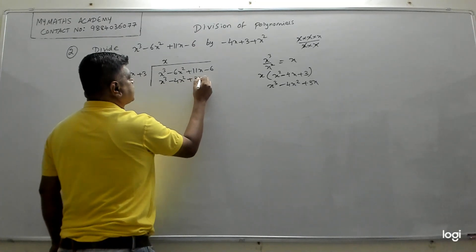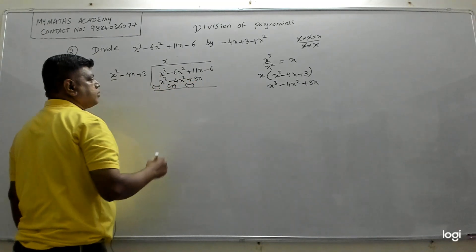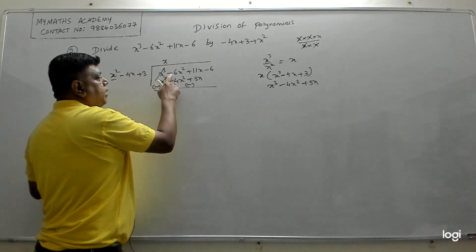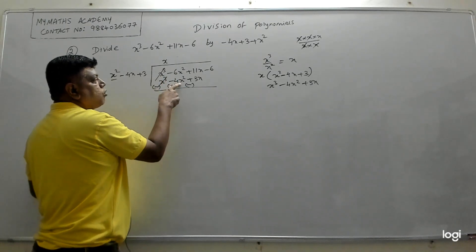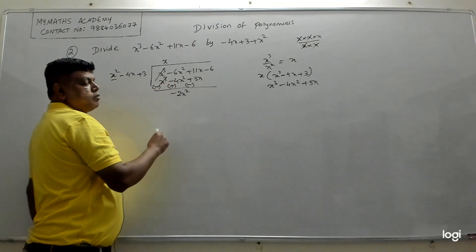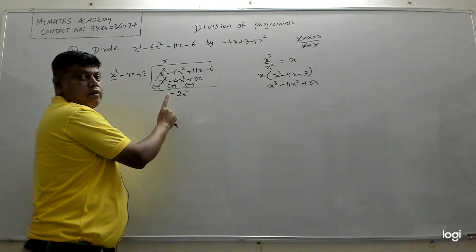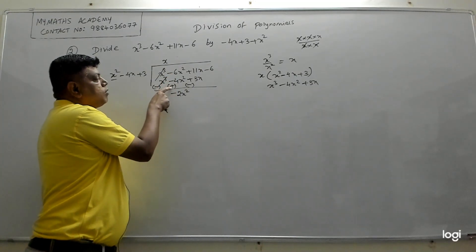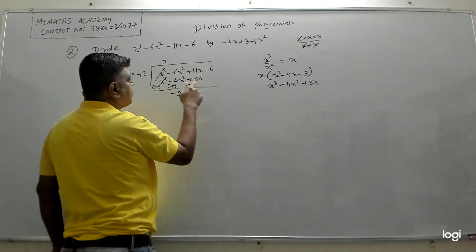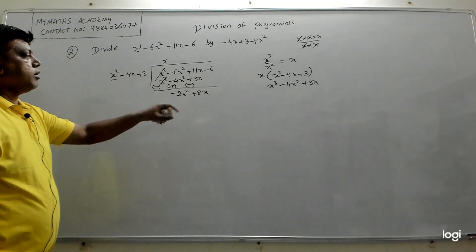Substitute x³ − 4x² + 3x here and subtract — change the signs. x³ − x³ cancels. Then −6x² + 4x² = −2x². You have to be careful with signs: −6 + 4 = −2, so you get −2x². Then 11x − 3x = +8x. Sign is very important — always look at the changed sign.